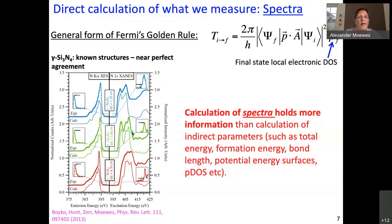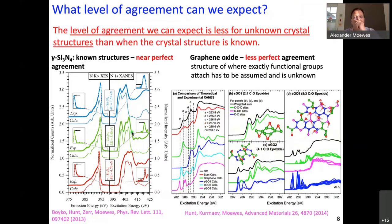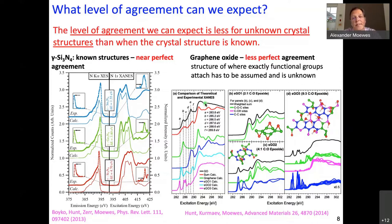A somewhat different case occurs when we have to feed in assumptions and structures that are not exactly determined. This is an example for graphene oxide — we have less perfect agreement. You have to calculate all the spectra of all these sites, then add them all up. When you compare the red spectrum, which is the overlay of all the different calculations shown on the right side, to the black measured absorption spectrum for graphene oxide, the agreement is quite good, but not as stellar as when the structures are known. The level of agreement scales with how well the input to the density functional codes is known — which is the structure and the space group.